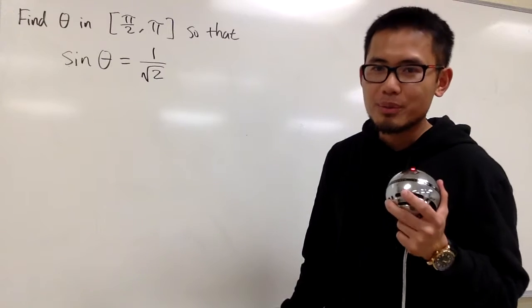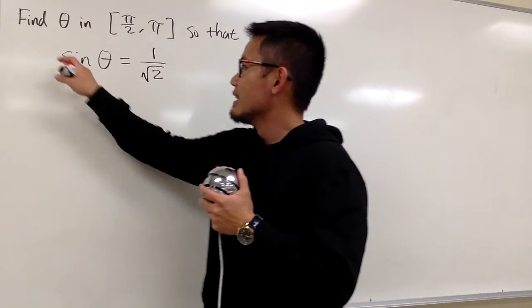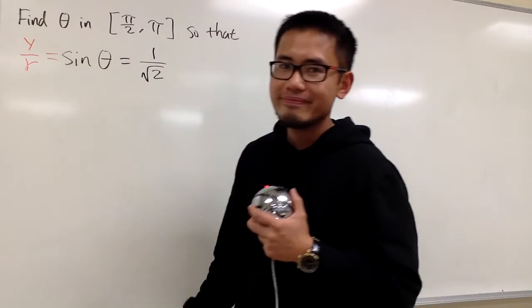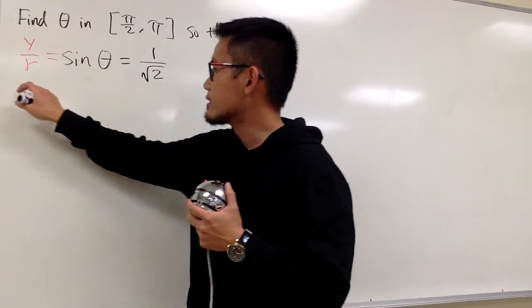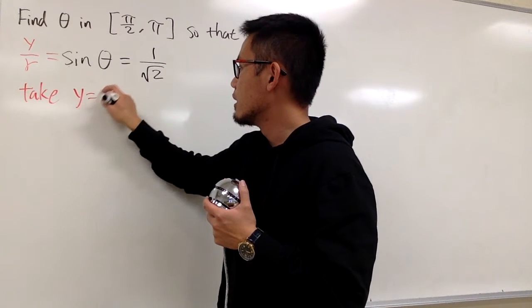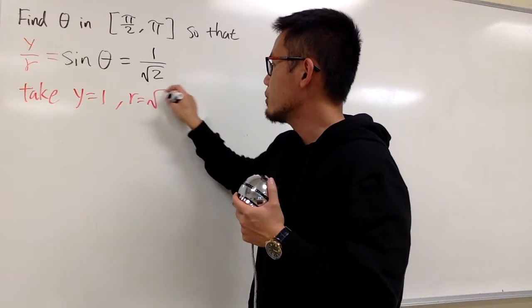First, we have to remember the definition of sine. This right here is the same as saying y over r. And from here, we can say let's go ahead and take y to be 1 and r to be square root of 2.